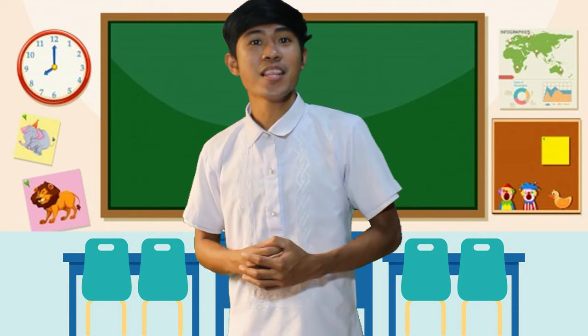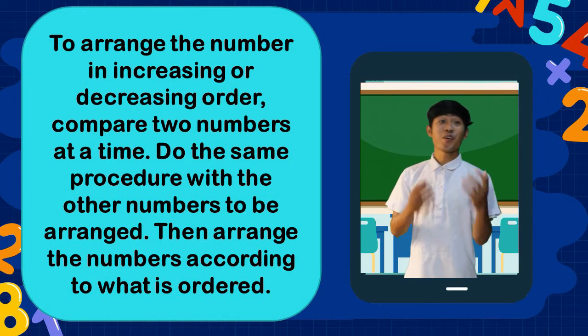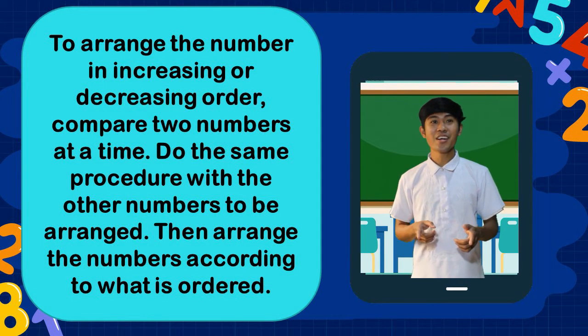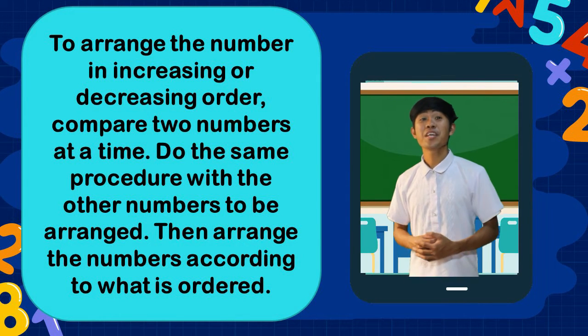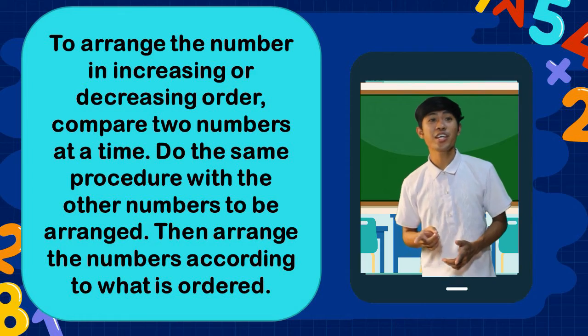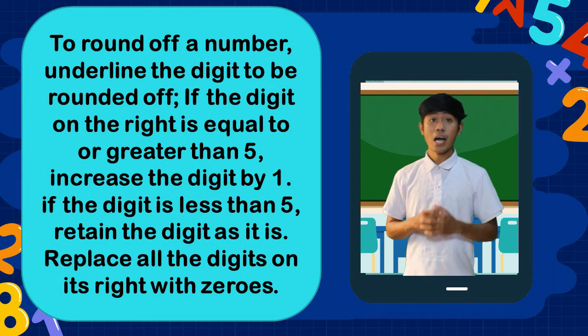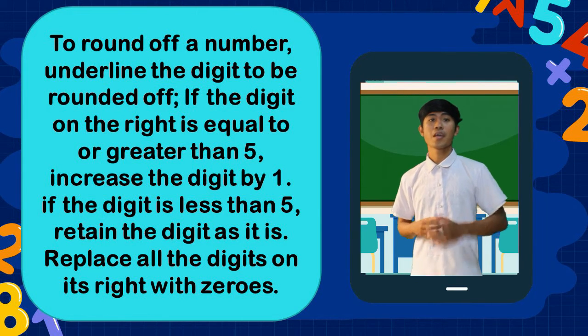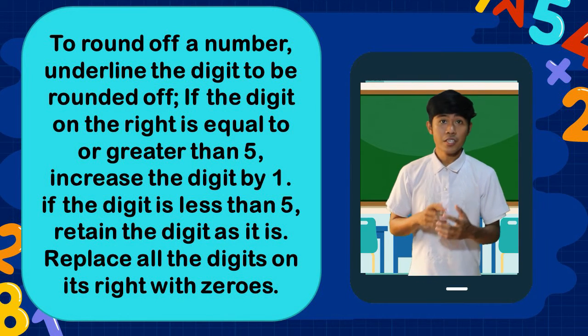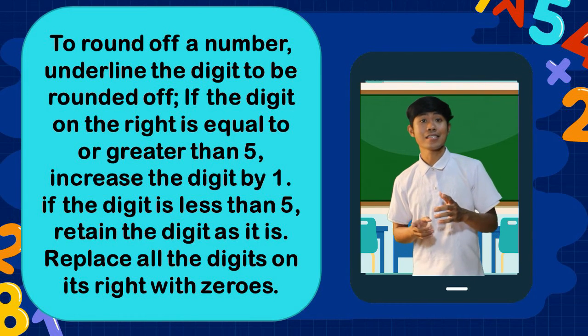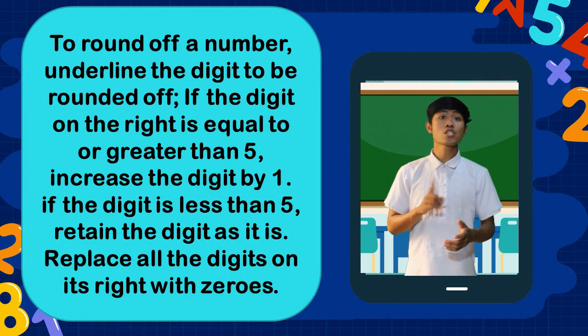Did you get it all correct? Very good. We finished all the activities. Great job! Before we finish our lesson, let's remember this: to arrange numbers in increasing or decreasing order, compare two numbers at a time, do the same procedure with the other numbers, then arrange them according to the required order. To round a number, underline the digit to be rounded. If the digit on the right is equal to or greater than 5, increase the digit by 1. If the digit is less than 5, retain it. Replace all digits to its right with zeros.